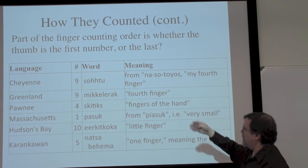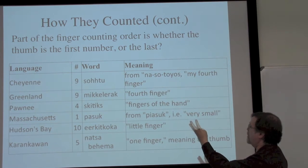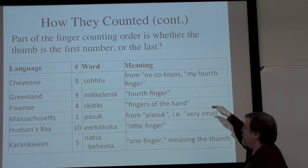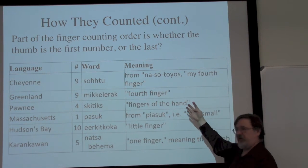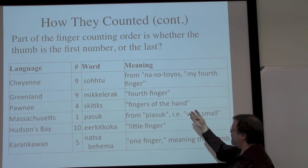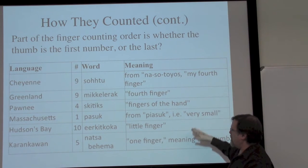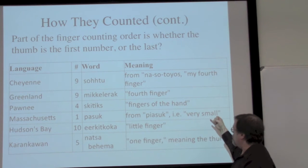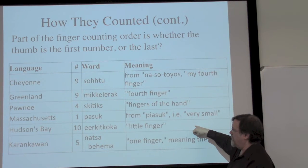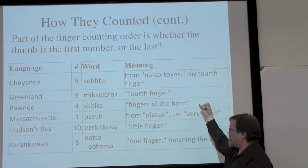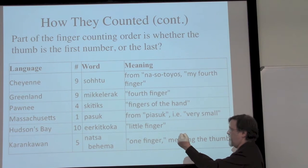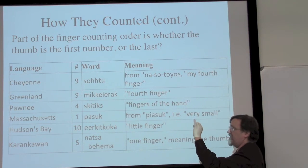In Cheyenne, the number nine — on the second hand — is 'my fourth finger,' so we know all four fingers have come up. Similarly in Greenland and in the Pawnee, the number four is 'the fingers of the hand' — the word for finger being different from thumb. In Massachusetts, the number one is 'very small,' referring to the little finger. So the little finger is the first number being counted. And in Hudson Bay, probably on the second hand, the little finger is going to be the last thing that comes in.